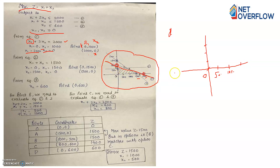Now move to equation number 2: x1 + x2 = 1500. Same process — put x1 = 0 to get x2 = 1500, giving point (0, 1500); and put x2 = 0 to get x1 = 1500, giving point (1500, 0). Join these two points to get line number 2.